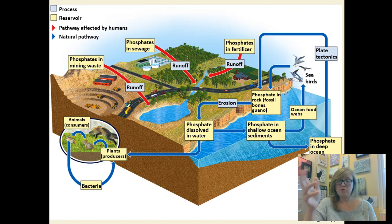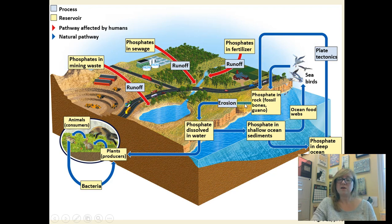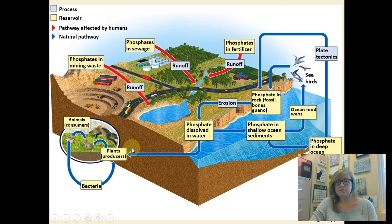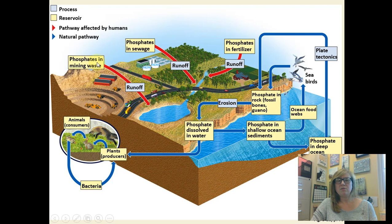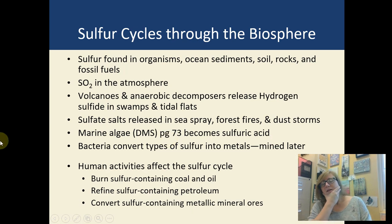Plate tectonics moves and creates rock, which gets weathered and eroded, dissolved into water, and eventually reaches plants through phosphate ions in the soil, then into the rest of the food web, decomposed and looped back. It can also dissolve into the ocean, become part of deep ocean sediments, and after hundreds of millions of years get recycled by the rock cycle. When we deforest, strip-mine, or add phosphates through sewage and fertilizer, we add additional phosphates into our water — not great.